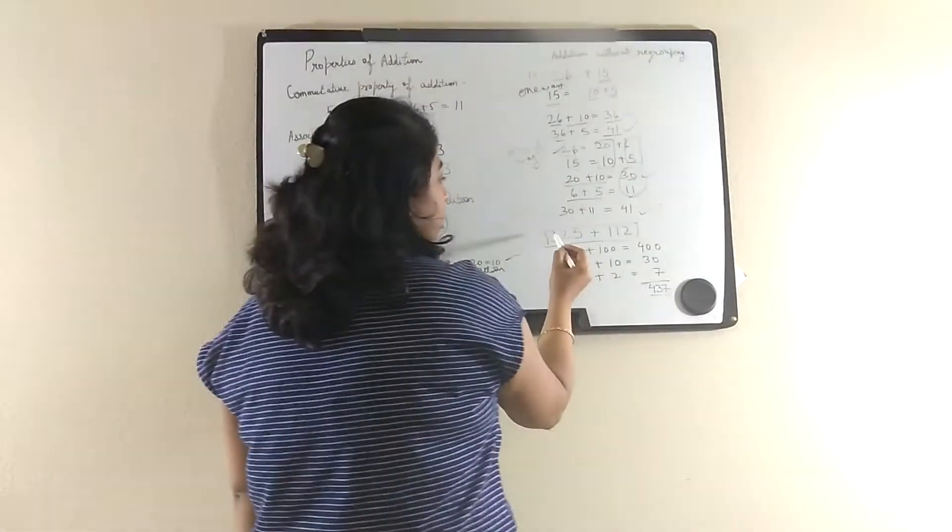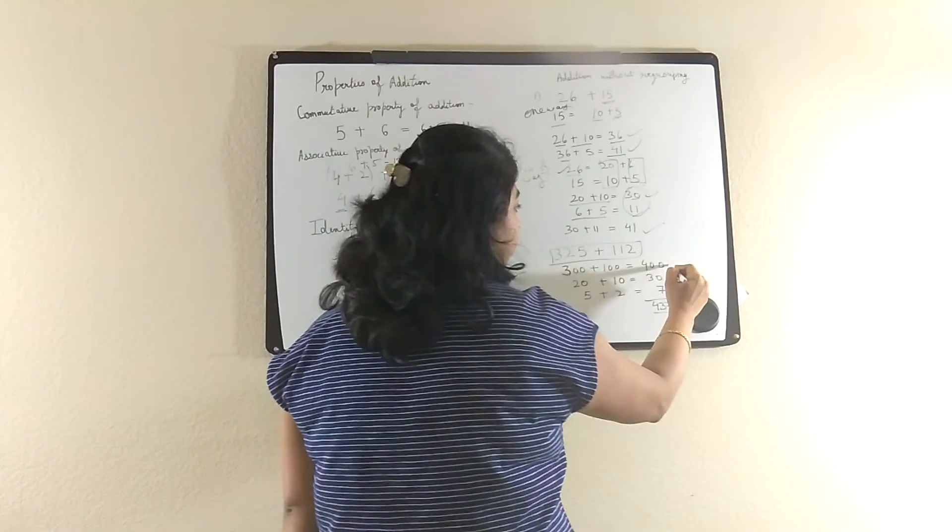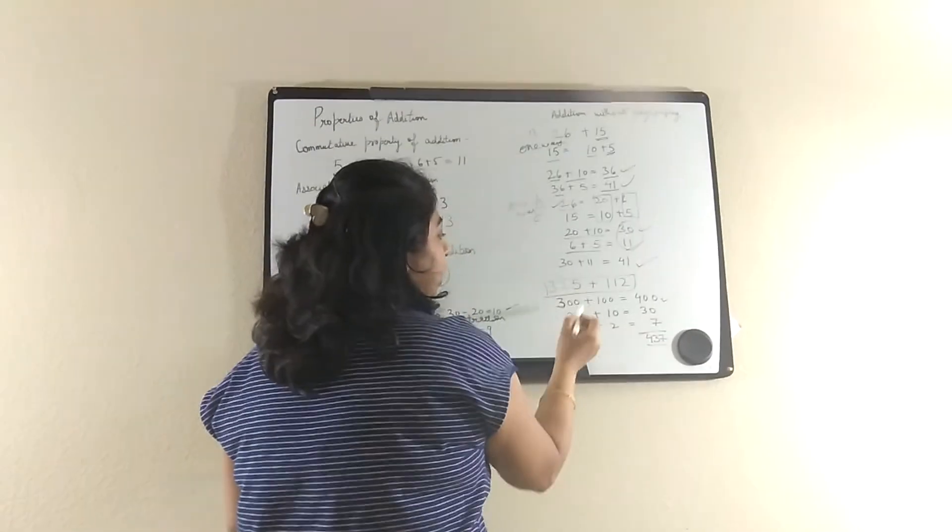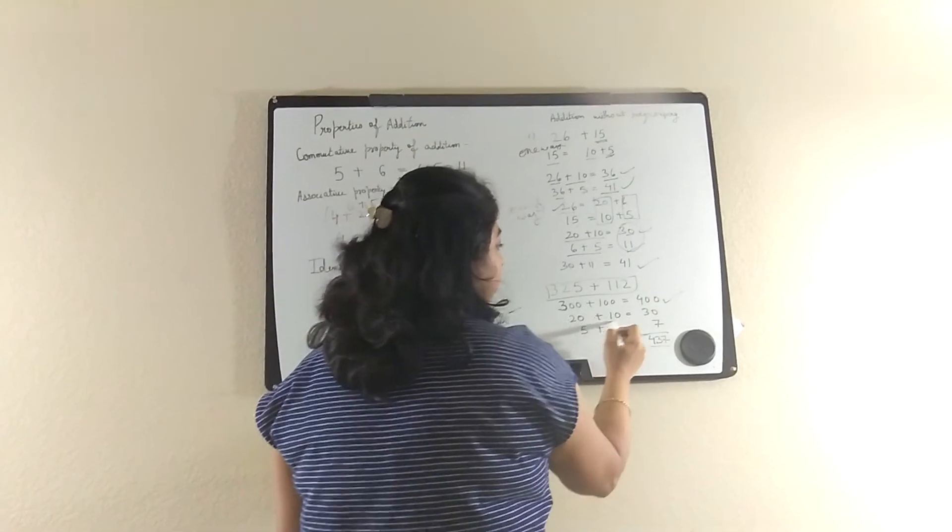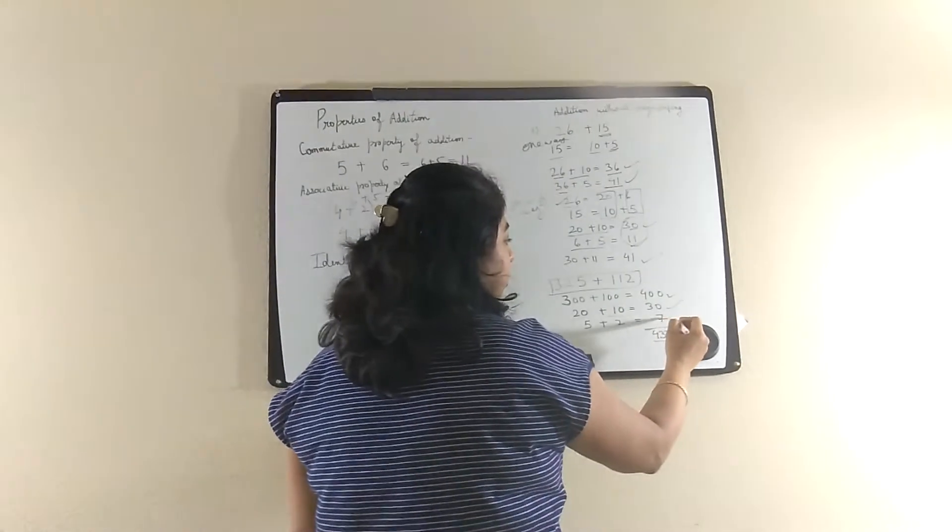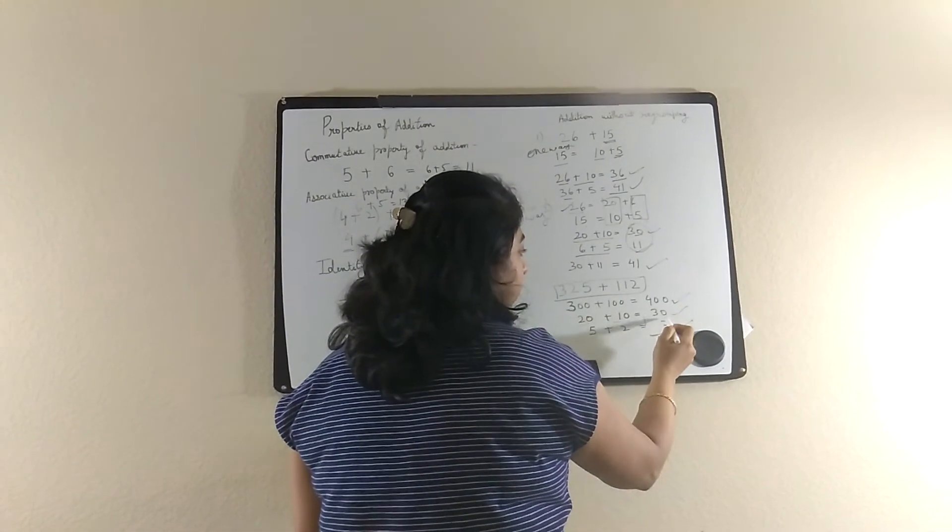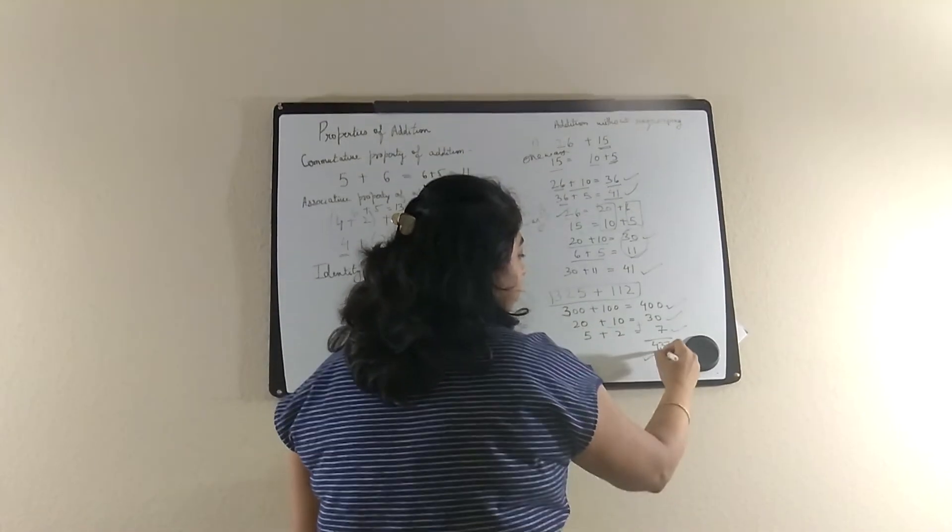So you can take the hundreds first. 300 plus 100, that will be 400. Then you take the tens. 20 plus 10, that will be 30. 5 and 2, that will be 7. And when you add all of them, 400 plus 30 plus 7, it will be 437.